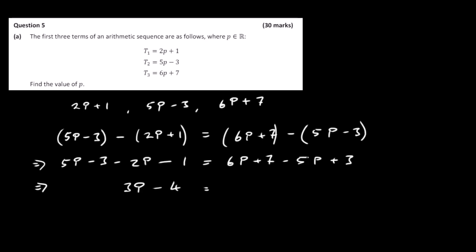On the right-hand side, we've got 6P minus 5P which is just P, and 7 plus 3 is 10. Bringing the letters to one side and the numbers to the other side gives us 2P equals 14, and that finally gives us our answer: P is equal to 7.